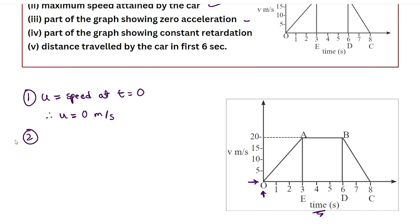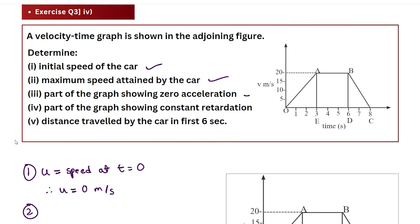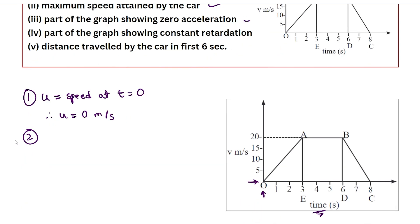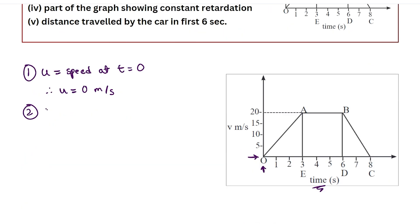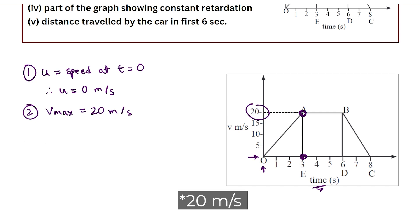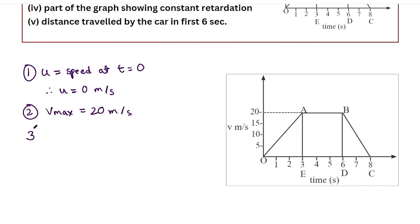Now let us move on to the second part: calculating the maximum speed attained by the car. Just from a glance, I can see that the maximum value of velocity ever achieved starts at point A. At the three-second mark we get the maximum value, and our maximum velocity is 12 meters per second.